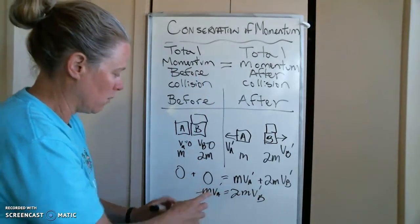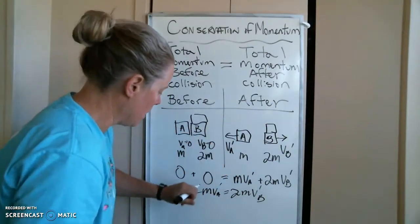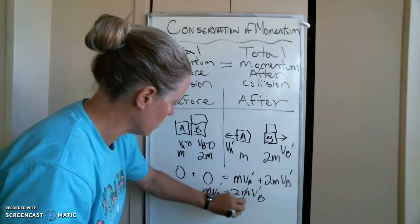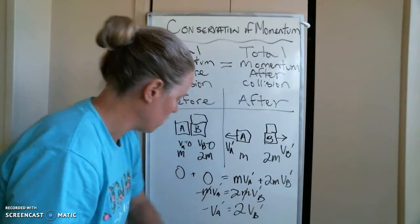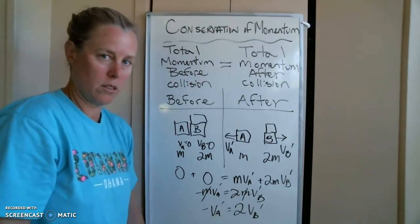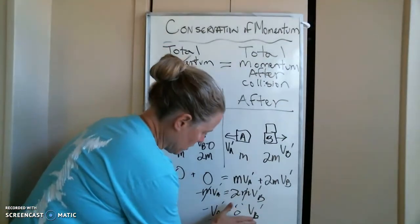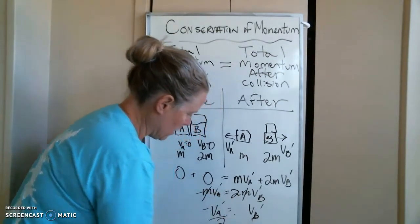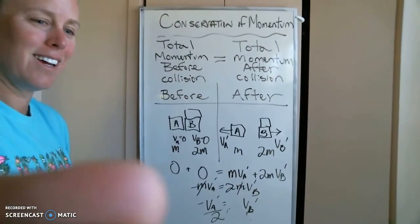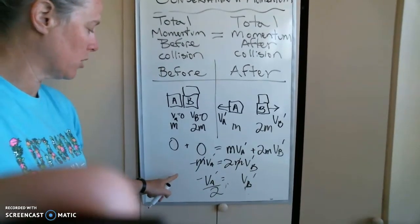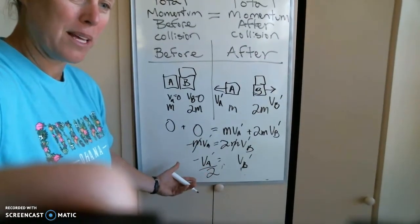So right now, what's the negative mean? It just means if right is positive, A is heading off in the negative. So if I do algebra, mass goes away. And so VA is equal to double VB. So who's going faster? VB is going half the speed as VA. So let's see if we can get that. VA in the leftward direction is going, or VB in the rightward direction is half the speed as VA. If you can kind of make that connection.